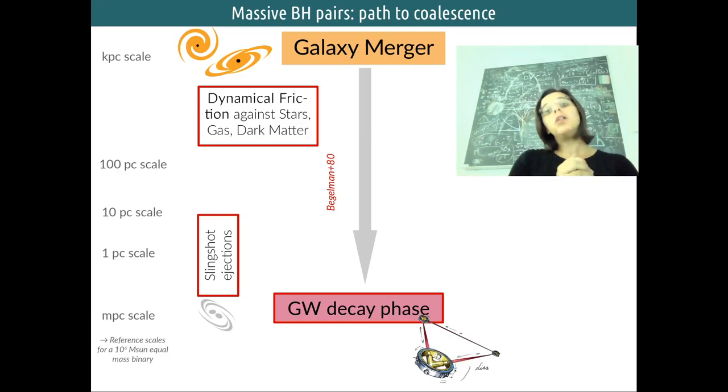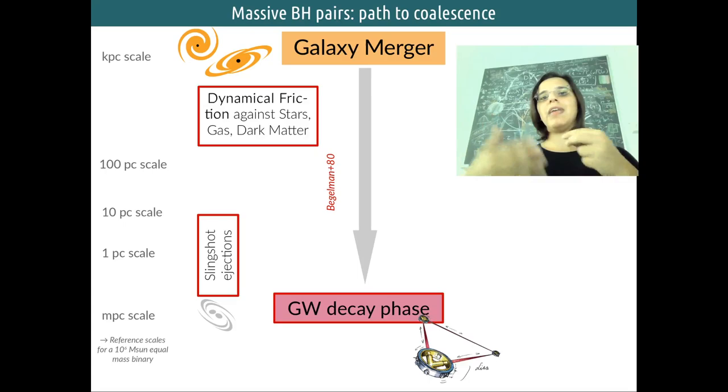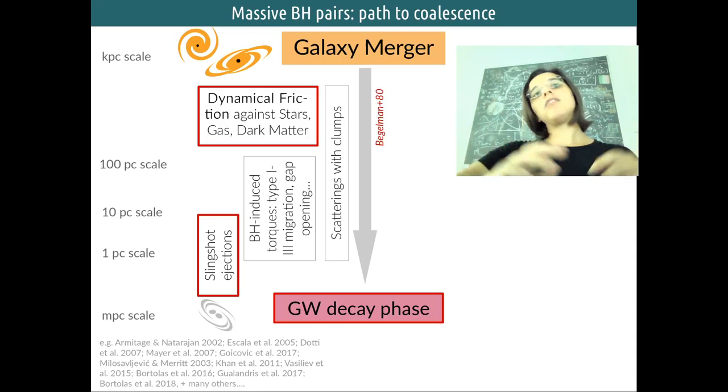But what is their path to coalescence? First of all, they experience a sort of gravitational drag against the surrounding environment, which is called dynamical friction. And when they form a binary at roughly a parsec separation, they enter the slingshot ejection phase, where they interact with stars, kicking them out of the galaxy, and they shrink in their interaction until they reach the gravitational wave stage.